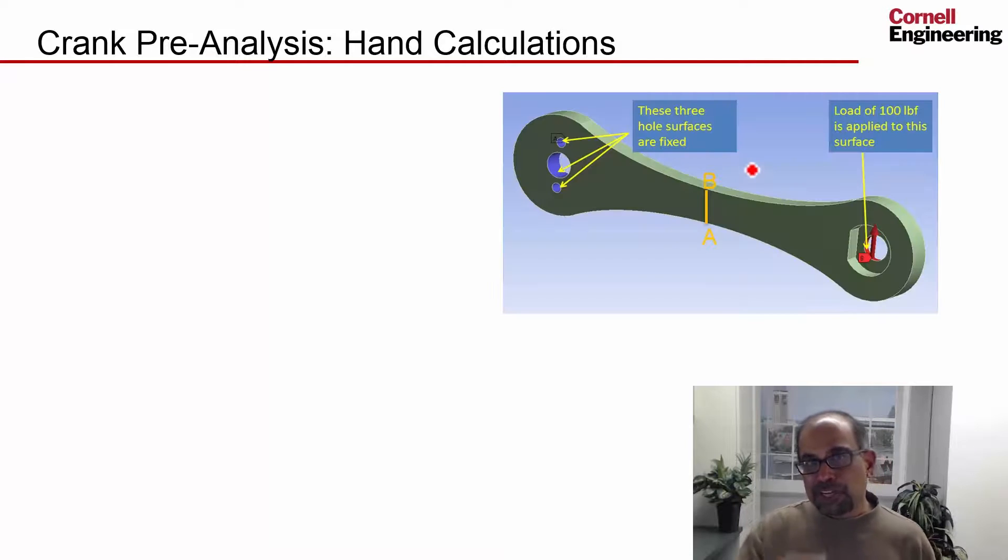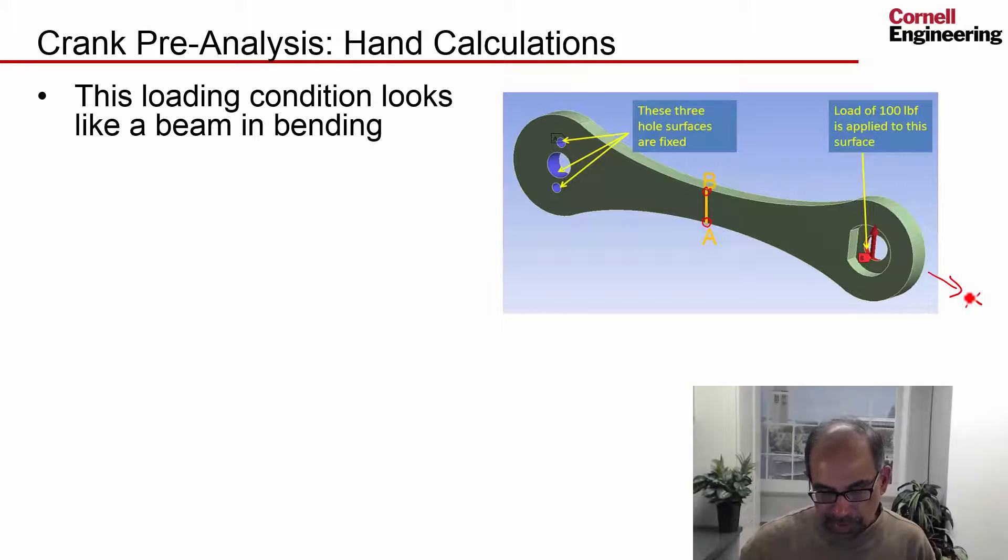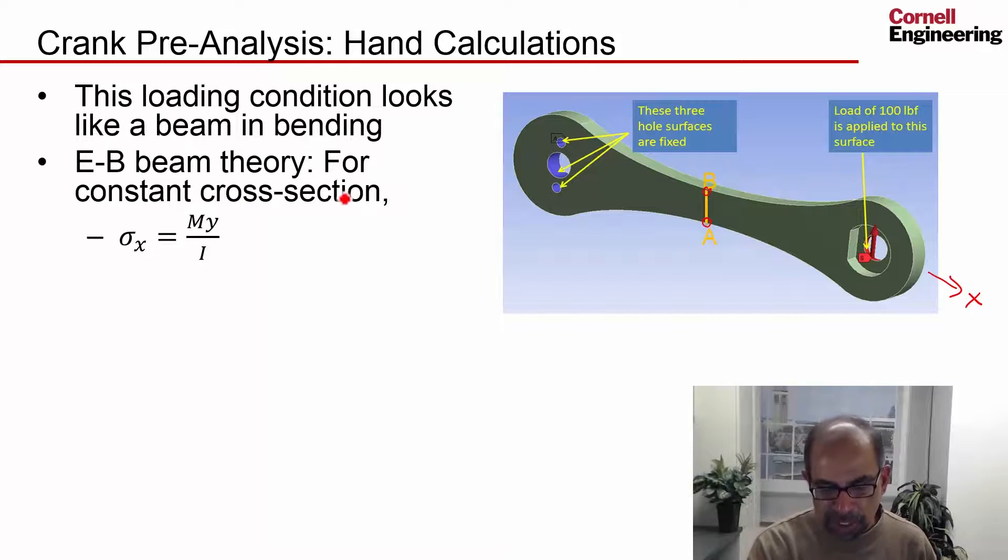And so we can use that theory and come up with some estimates of what the stress is at A and B, in a location like that. And we are looking at the stress in the x direction, which is called the bending stress. That's going to be the biggest component, so the normal stress in the x direction. And we say, the loading condition looks like a beam in bending. And if I had uniform cross section, the bending stress is given, or sigma x is given by MY by I.